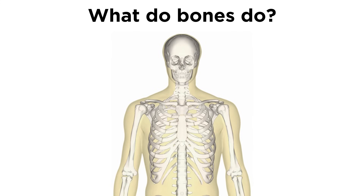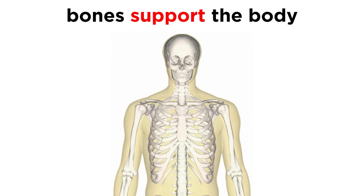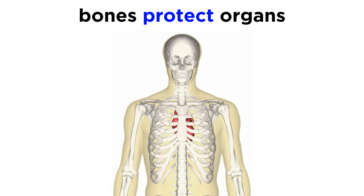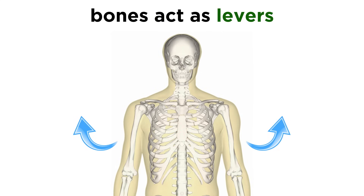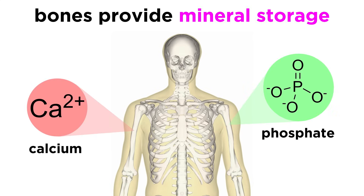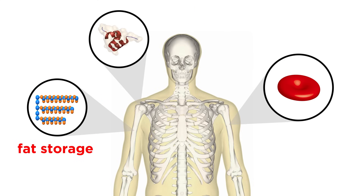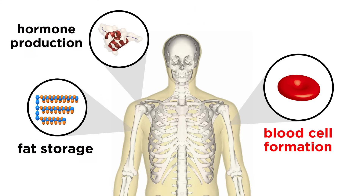What do bones do? Clearly the main function is support. The rest of the body essentially hangs on the skeleton, supported by the bones as we stand and walk around. Also, organs are protected by bones, like the heart within the ribcage. Bones act as levers that allow us to perform physical tasks. Bones also provide mineral storage, like calcium and phosphate, which can be released into the bloodstream as necessary, as well as fat storage, hormone production, and blood cell formation.